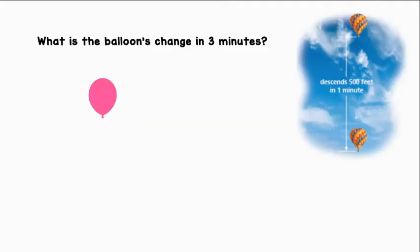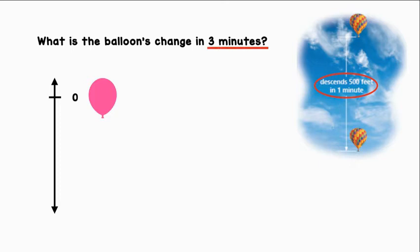What is the balloon's change in three minutes? Let's represent this situation using a vertical number line. It says the balloon descends 500 feet in one minute. We need to find the change in three minutes.